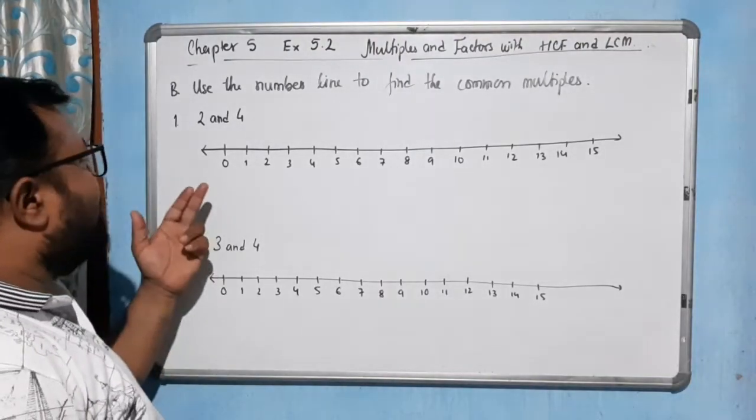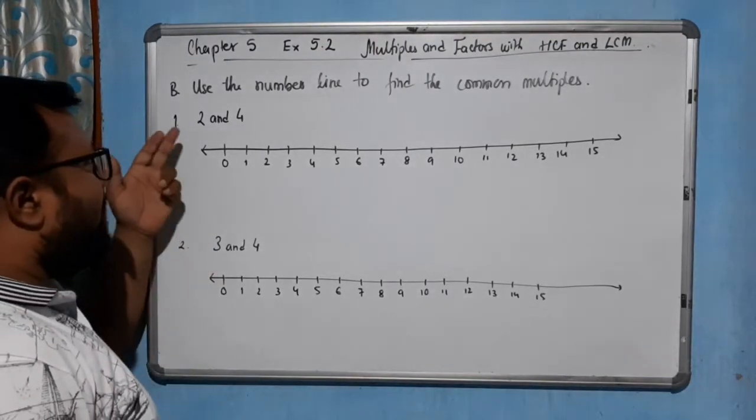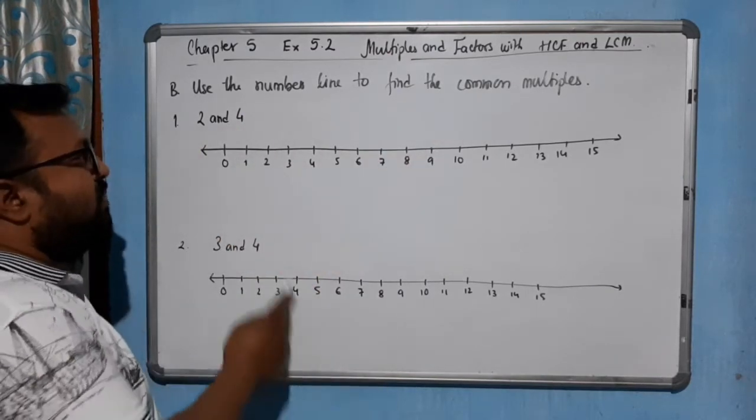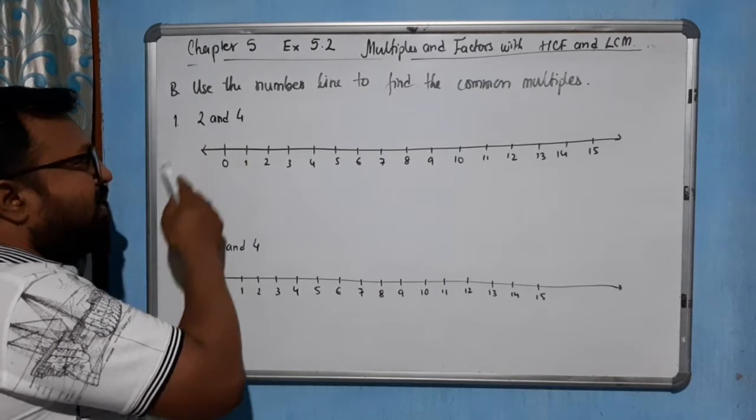Hello students, now come to the next question. We use the number lines to find the common multiples. Common multiples of what? 2 and 4 in the first case.